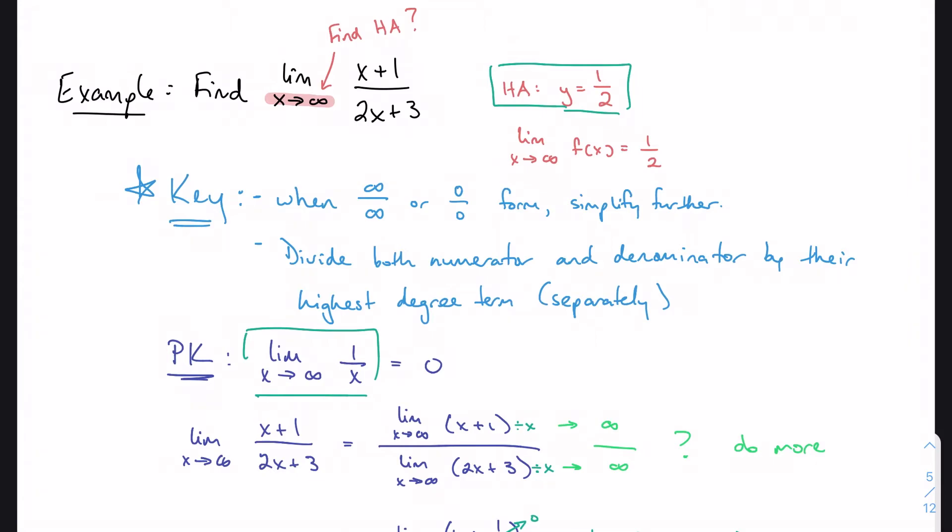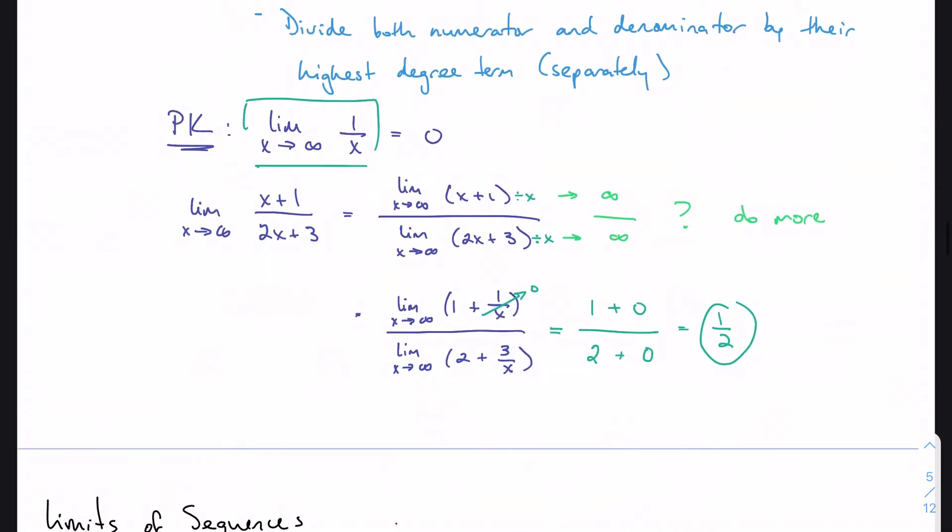So actually, I should correct what I had said earlier that we don't want to divide by this coefficient. We just want to divide by the variable with highest degree. That's the only way we were able to get that 2 to show up like we needed to. It's the only way we were able to make that work.